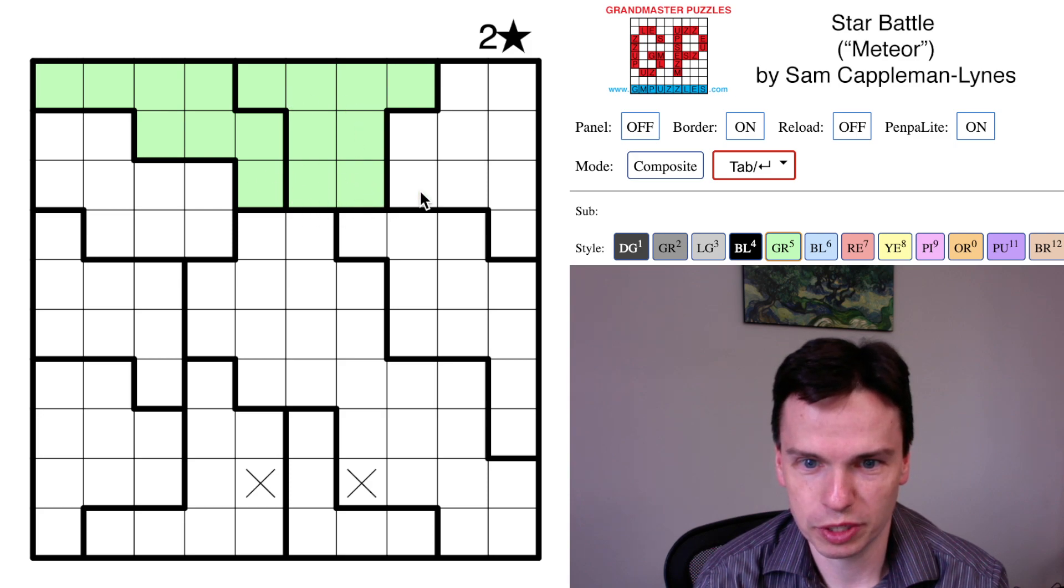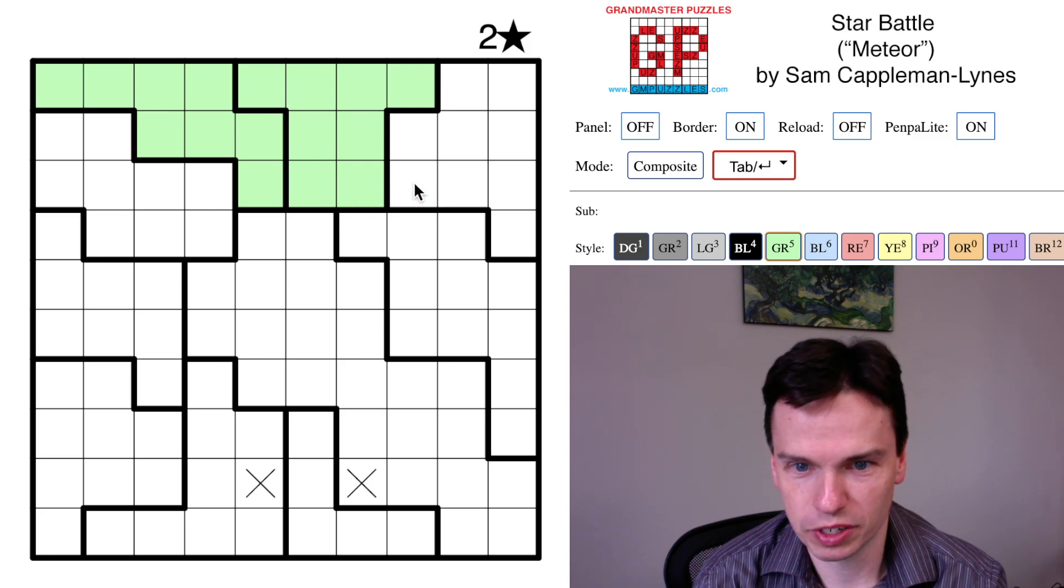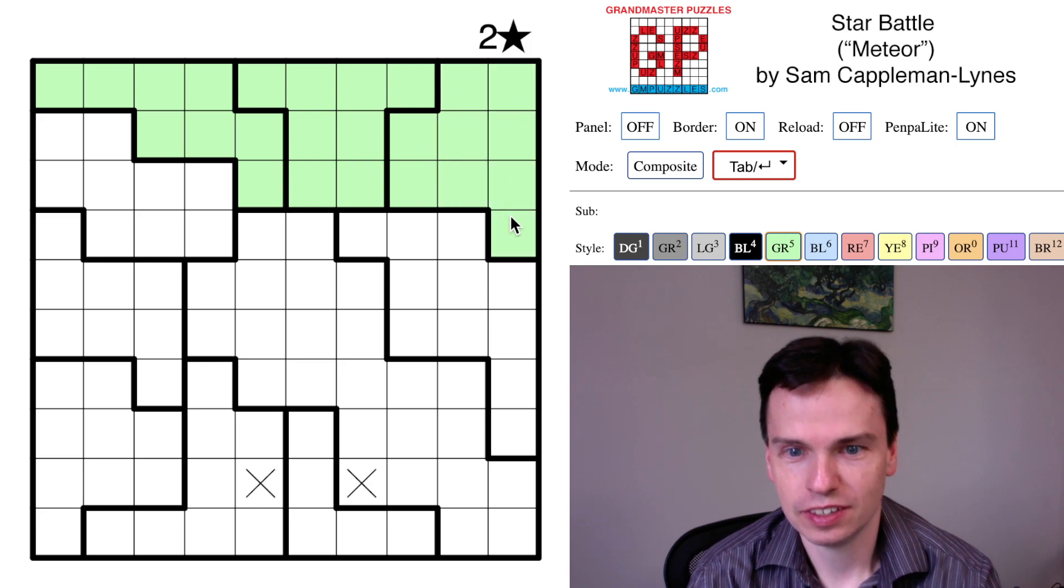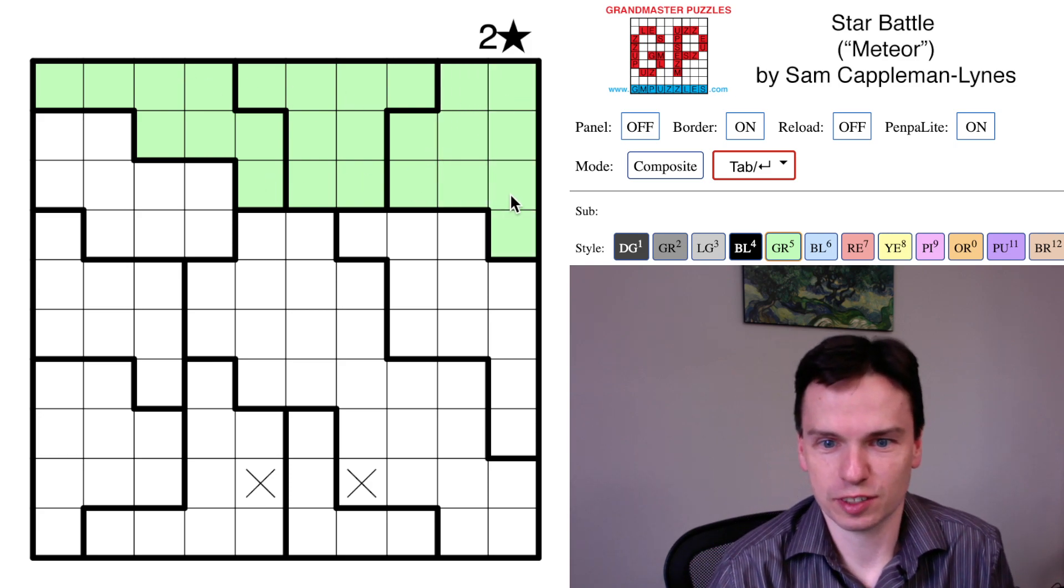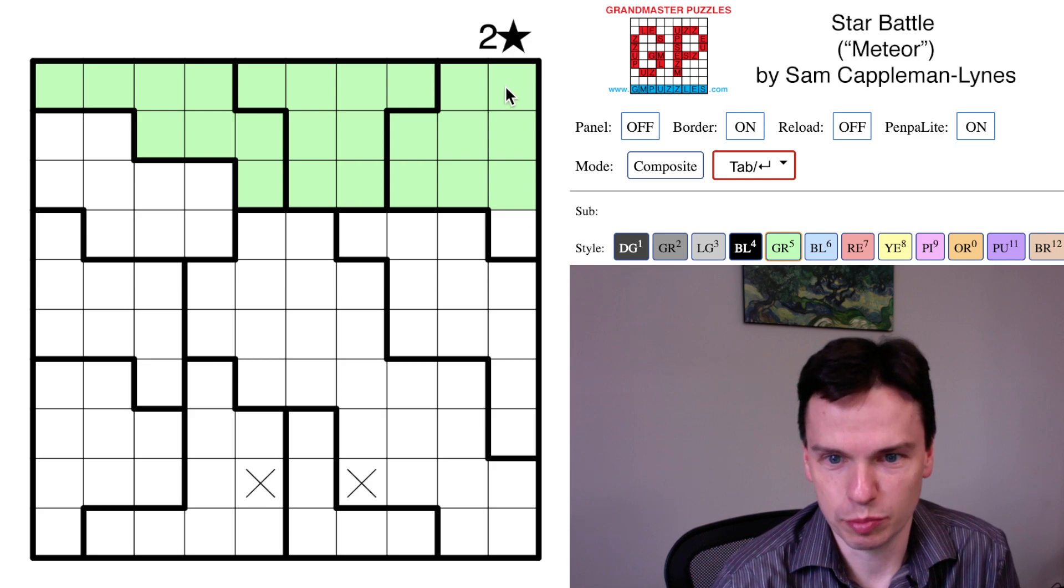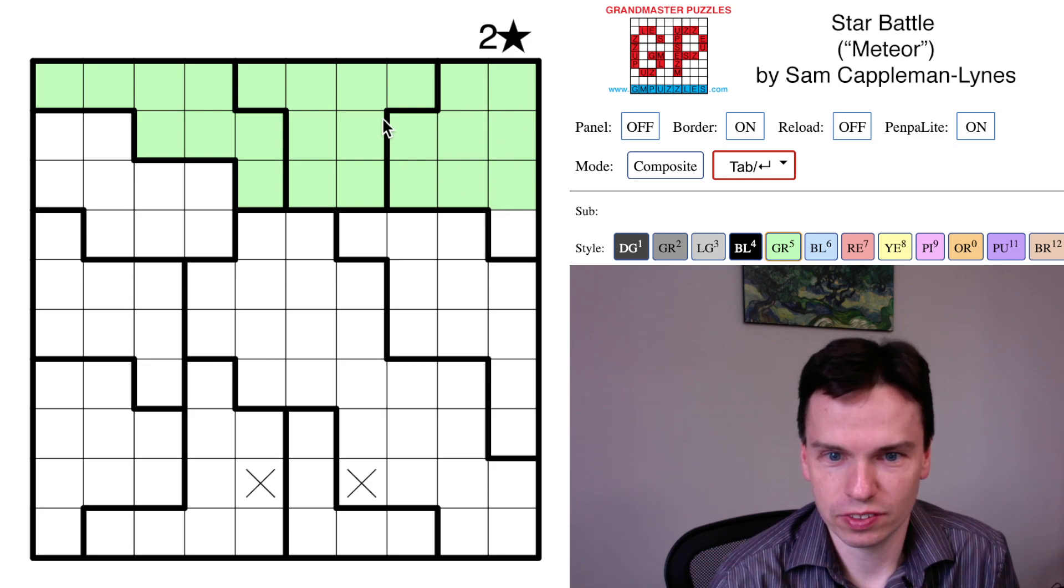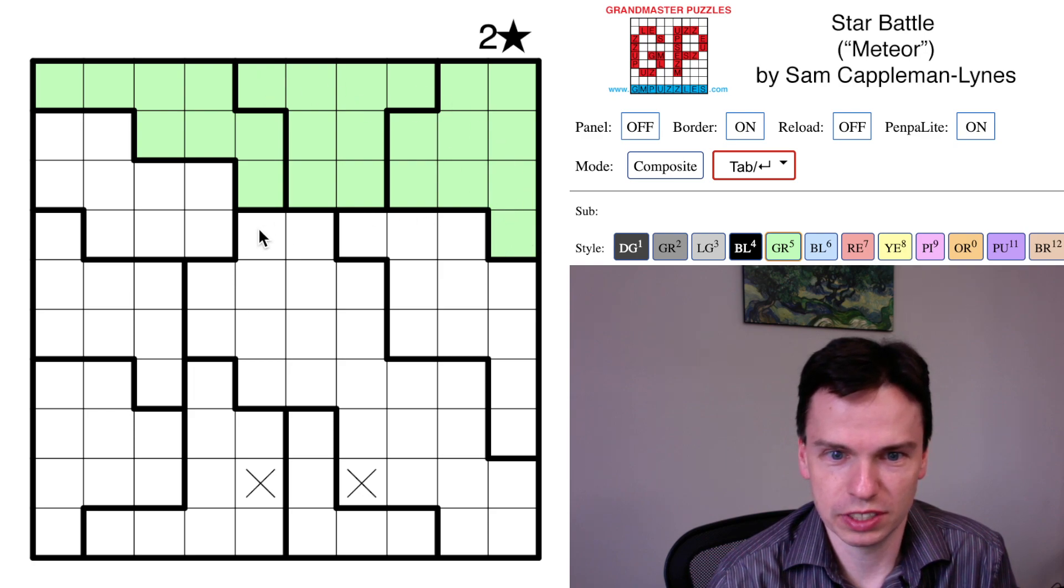But this set of these three is very high tension because now if this cell weren't actually part of this region, all of the six stars are accounted for in green. So this is a group that looks to be pretty key.